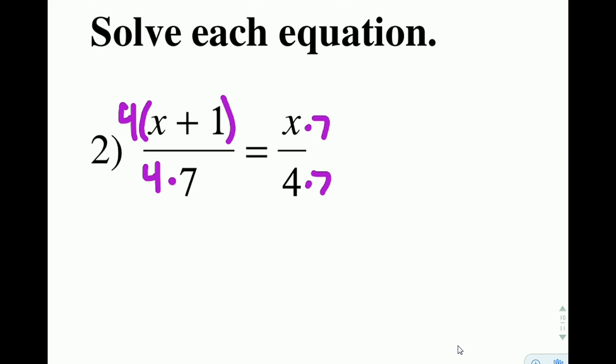And I'm going to rewrite this as, let's distribute this, 4x plus 4 over 28 equals 7x over 28.